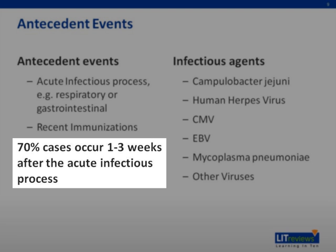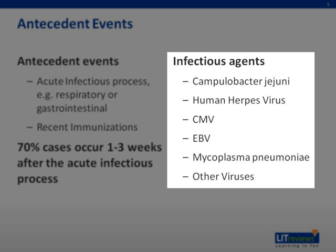Approximately 70% of the cases of GBS occur one to three weeks after an acute respiratory or gastrointestinal infection. Campylobacter jejuni, human herpes viruses such as CMV and EBV, as well as Mycoplasma pneumoniae, have been identified as antecedent infections.